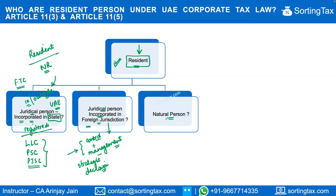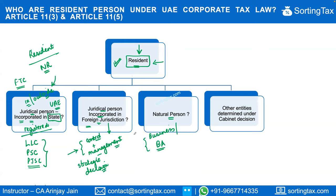The third category is a natural person — an individual — who can also be considered a UAE resident if they are carrying out a business or business activity in the UAE. If they are not carrying out any business or business activity, they will not be considered a UAE resident. Other entities may also be determined as UAE residents under cabinet decisions.